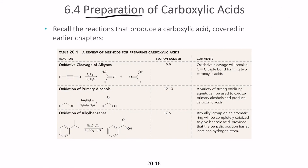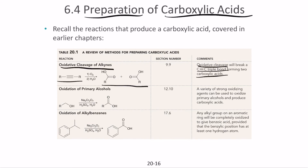Next, let's discuss preparation of carboxylic acids. The first method is oxidative cleavage of alkynes — more commonly internal alkynes. Ozonolysis breaks the triple bond and forms two carboxylic acids. The second method is oxidation of primary alcohols: in the presence of sodium chromate and sulfuric acid, strong oxidizing agents convert primary alcohols to carboxylic acids.